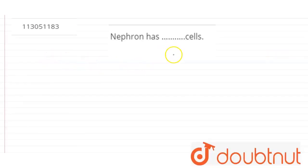Hello everyone, here our question is: nephron has blank cells. So, this is a fill-in-the-blanks type of question, and we need to understand what type of cell it is asking. The question is asking about the epithelial cells, which type of epithelial cells are present in this nephron.